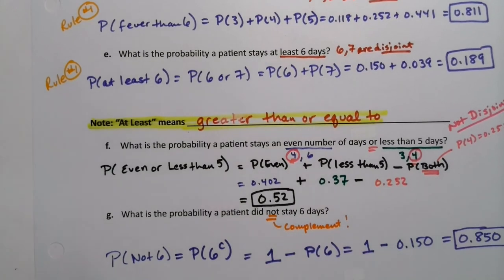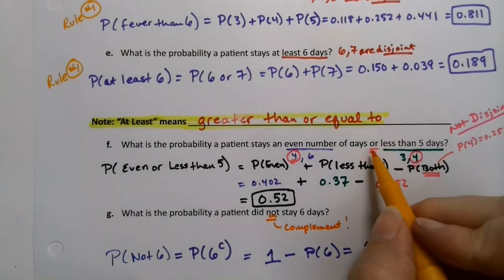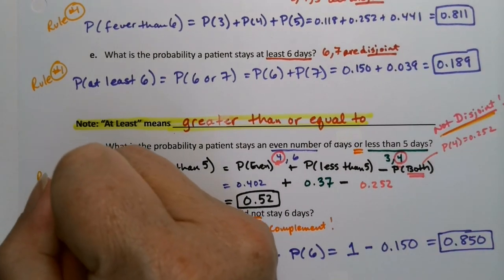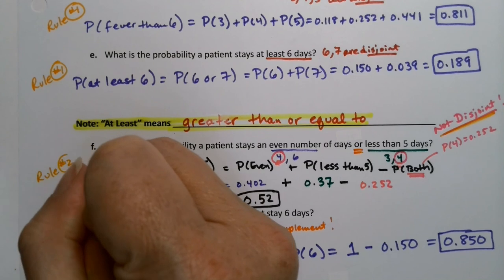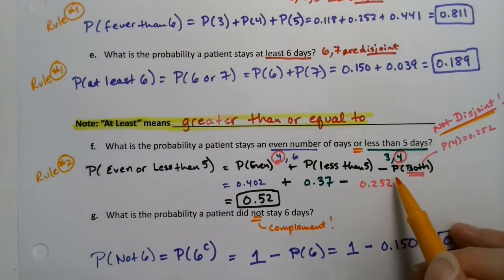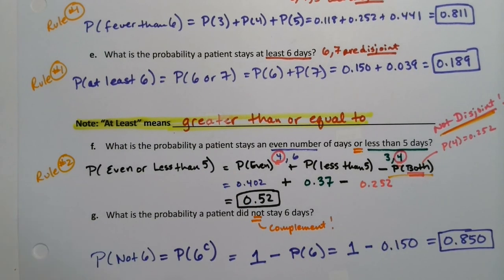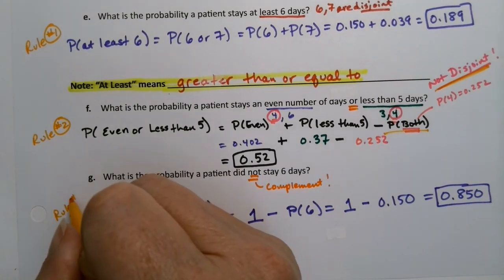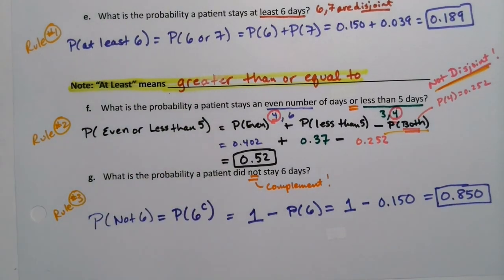But when I got down to part F, this is not disjoint, and that's why I had to use rule number 2, the general addition rule where you subtract away the overlap right here. And then this bottom one is rule number 3, it's the complement rule. Because of the negative voice, by saying not staying 6 days, it's a cue that you need to use the complement rule, which is rule number 3.